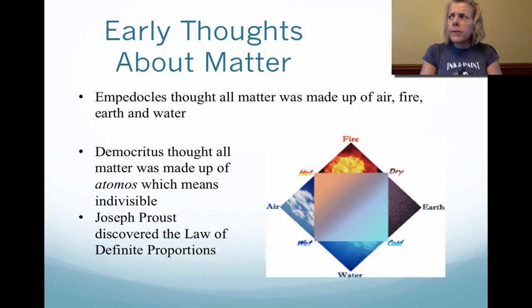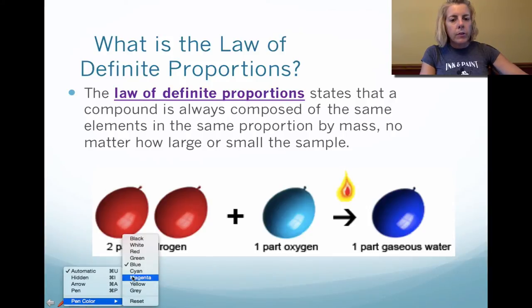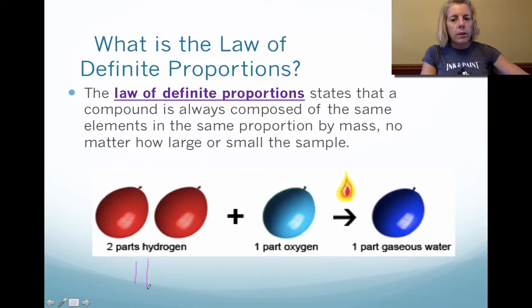This survived for a while, but then there was a man by the name of Joseph Proust. He came up with what he calls the law of definite proportions. The law of definite proportions says that a compound always has the same elements in the same proportion. So that means hydrogen, which is H2, when it combines with oxygen, we're going to get H2O. That's what the law of definite proportions means.